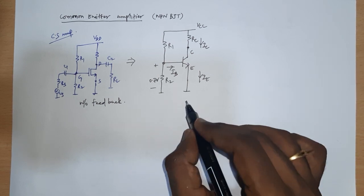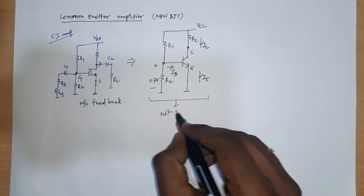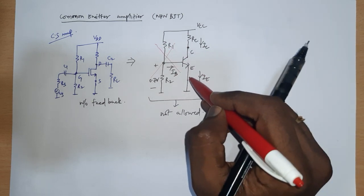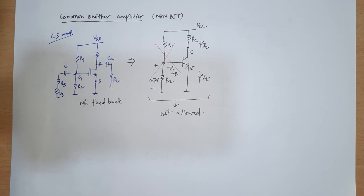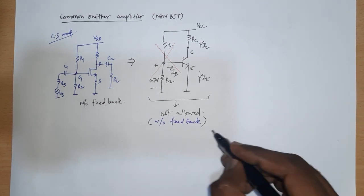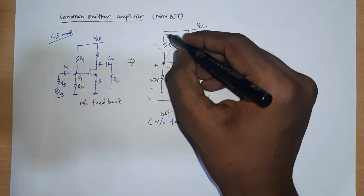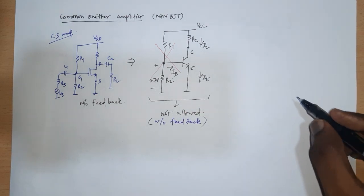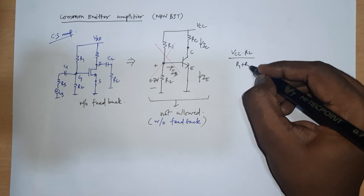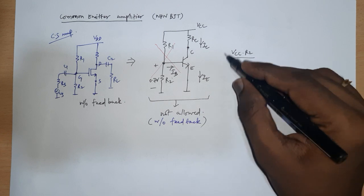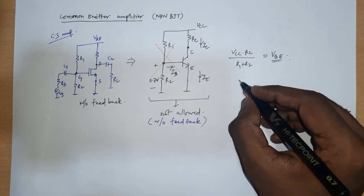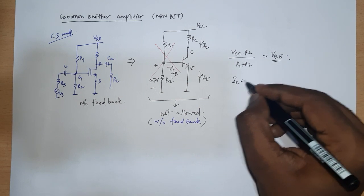We said that we could build a common source amplifier without any feedback, but you should not build a common emitter amplifier without any feedback — this is simply not allowed. With voltage divider bias and no feedback, this node potential will be affected only by these two resistors. If you assume IB is zero, this voltage is VCC times R2 divided by R1 plus R2, which becomes your VBE, and it is fixed.